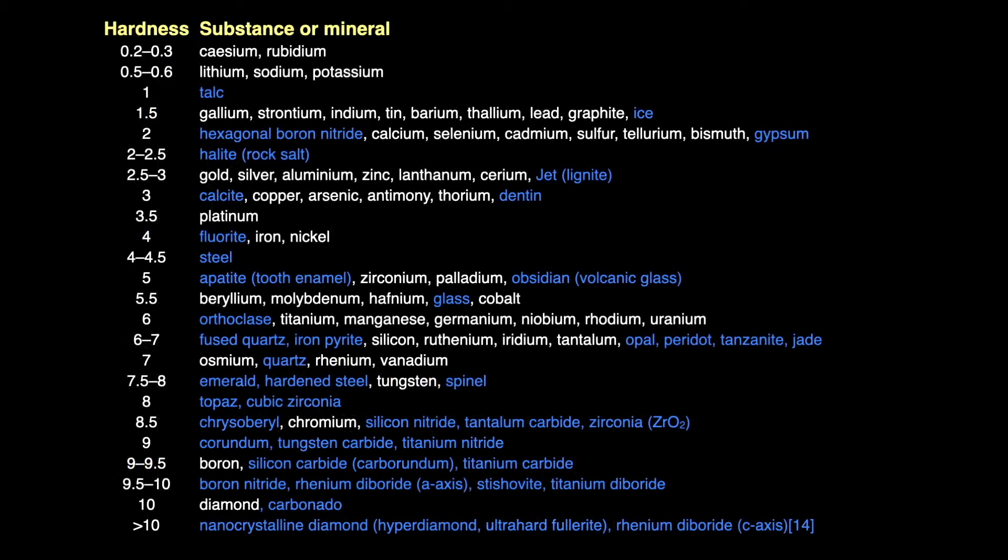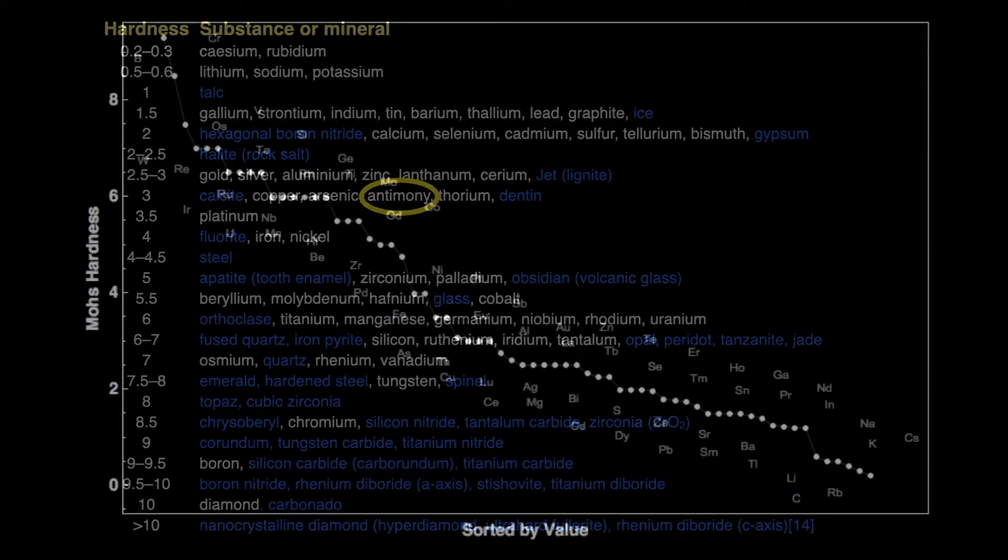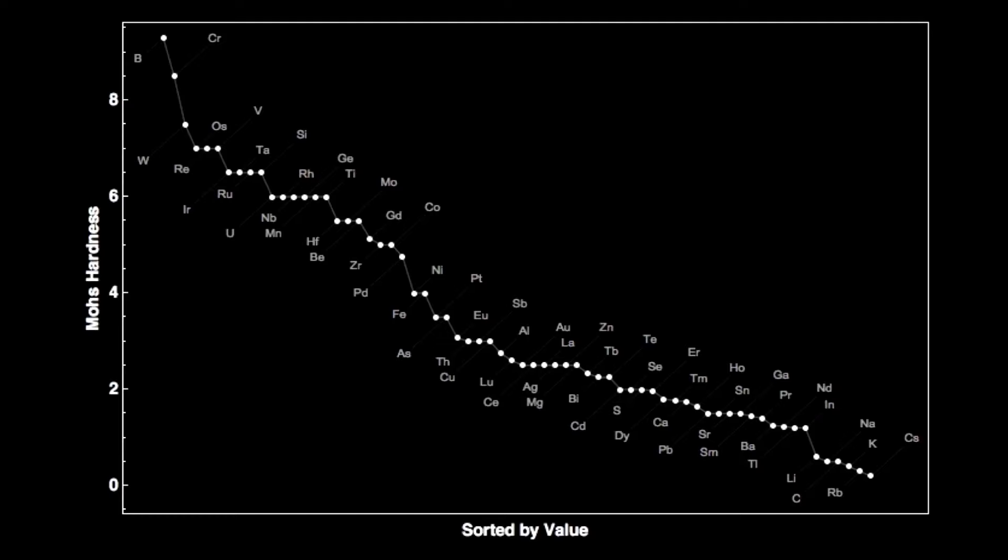Antimony is moderately hard with a hardness of 3 on Mohs scale of hardness. It's harder than aluminum, but softer than iron. In this chart of hardness, sorted from hardest, boron on the left, to softest, cesium on the right, antimony is the 30th hardest element.